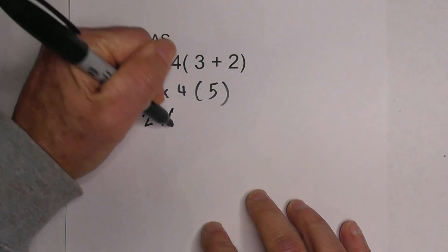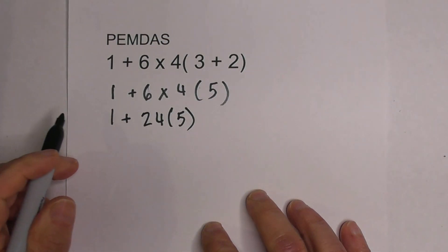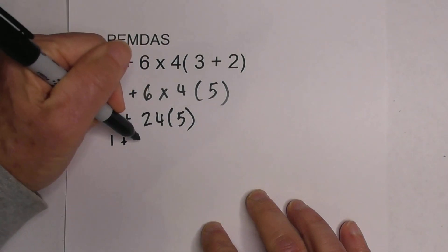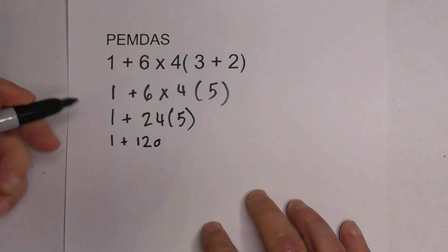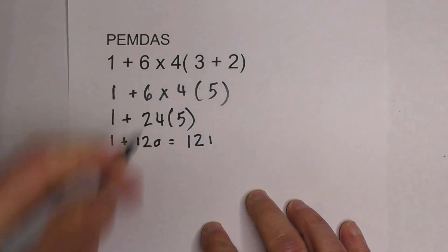So I have 1 plus 6 times 4 is 24, and then that's going to be times 5. Now, once again, we're going to work left to right. We're going to work multiplication. So we have 1 plus 24 times 5 is 120, and then 1 plus 120 is 121.